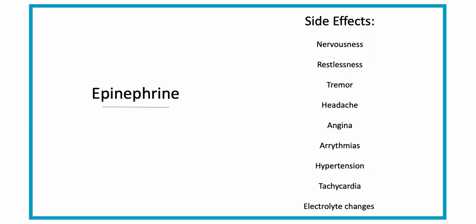Some side effects to watch for if your patient is taking epinephrine are nervousness, restlessness, tremor, headache, angina, arrhythmias, hypertension, and tachycardia — which can all happen because of that fight-or-flight response that's turned on. This causes vasoconstriction, causing an increase in blood pressure, an increase in cardiac output, and an increase in heart rate, even if angina occurs.